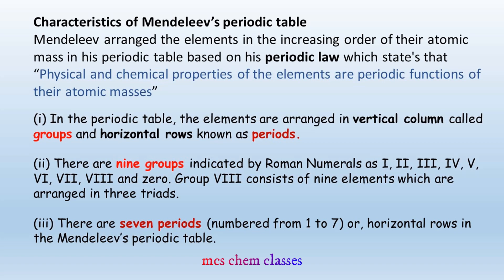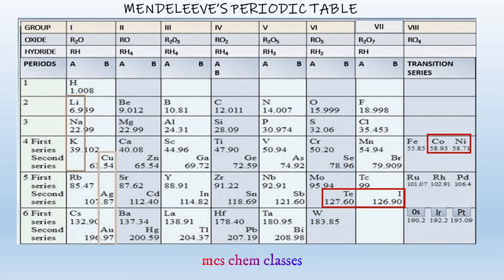In the periodic table, there are several groups — two groups, three groups. There are nine elements of zero group. Zero group is not a subgroup.